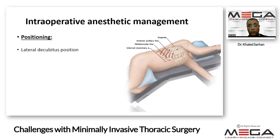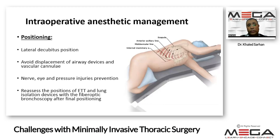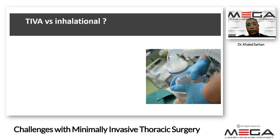Positioning: the surgery is usually done in the lateral decubitus position. We have to be vigilant to avoid displacement of airway devices and vascular cannulae. We should also avoid nerve, eye, and pressure injuries. After completion and setting the final position, we have to recheck the endotracheal tube and lung isolation.